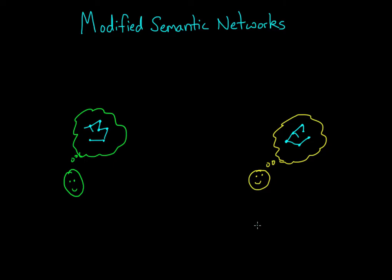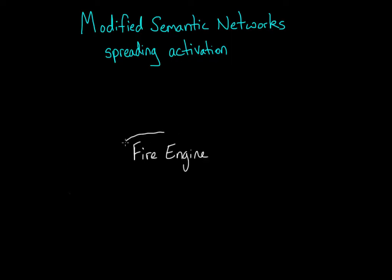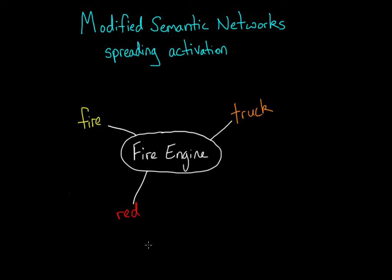One pretty cool thing about semantic networks is that all the ideas in your head are connected together. So when you activate one concept, you're pulling up related concepts along with it. This general elevation and availability is called spreading activation. For example, if I say "fire engine," not only do you think of a fire engine, but related concepts such as trucks, fire, even the color red become activated, making it easier for you to retrieve or identify those items.